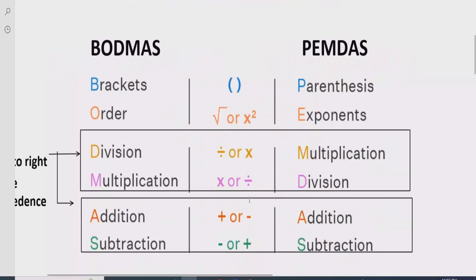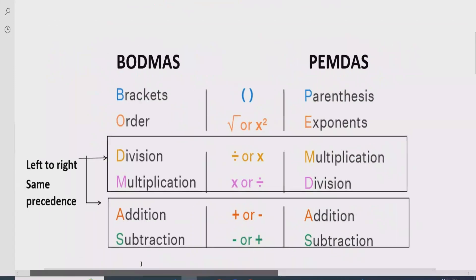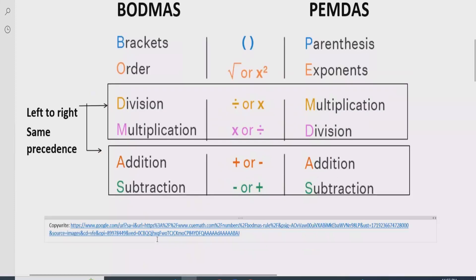Let's understand the rules we can use to solve the given expression. As you can see on the screen, we have two rules to apply. The first rule says: if your expression contains any bracket or parenthesis, you have to solve that part first. After that, you look at the exponent part, or the power of any number, and solve that in step two.